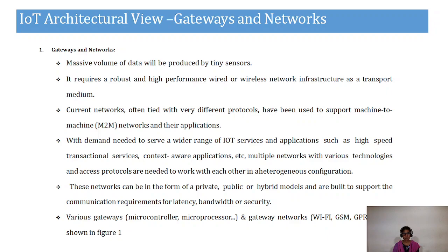The network layer supports machine-to-machine networks and their applications. It provides IoT services such as high-speed transaction services, context-aware applications, and multiple networks with various technologies. These networks can be private, public, or hybrid — built to support communication requirements for bandwidth, security, and latency. This network layer uses microcontrollers, microprocessors, and gateway networks like GSM, GPRS, and Wi-Fi.